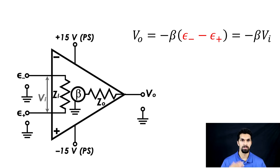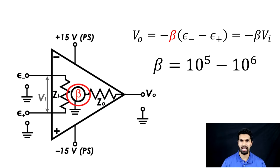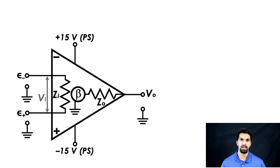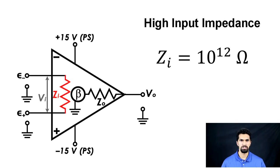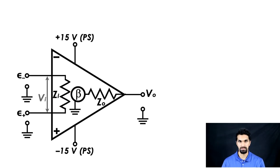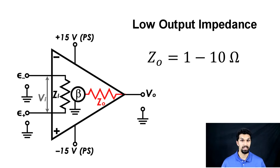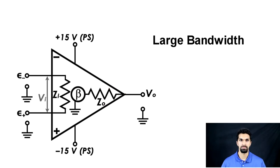Beta can have a very large value — 10⁵ or 10⁶ — so we can heavily amplify the difference between those two input voltages, though that's limited by the power supply (in this case ±15V). Operational amplifiers have a very high input impedance Zi, usually on the order of 10¹² ohms, meaning practically no current flows into an op amp — it only accepts an input voltage. The output impedance Zo is very low, between 1 and 10 ohms. Op amps also have a large bandwidth, meaning they can accept and output a wide range of frequencies.